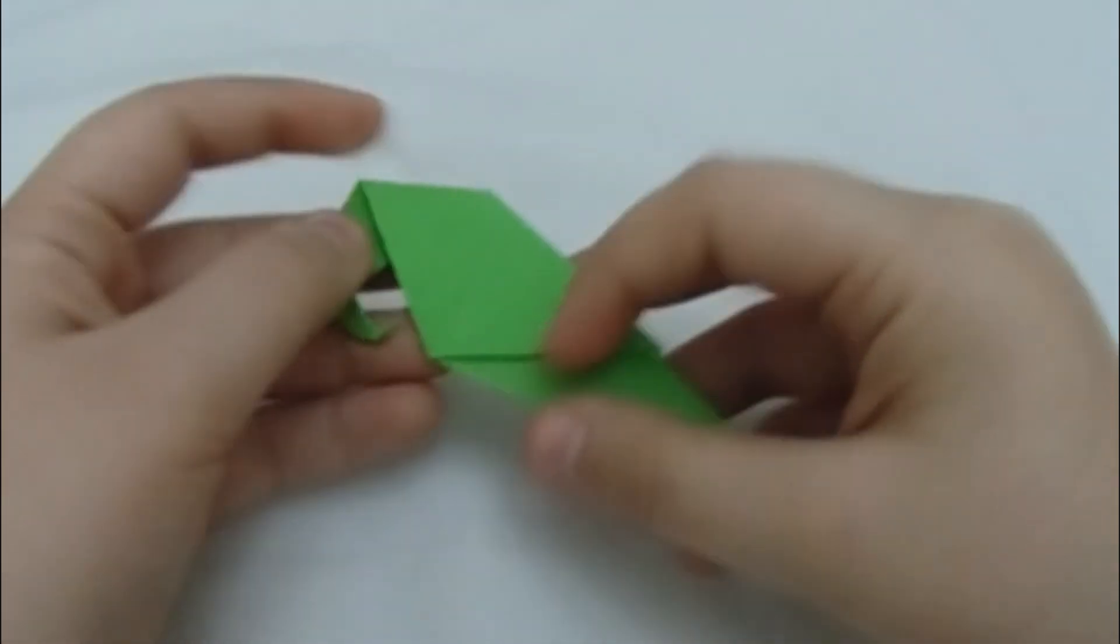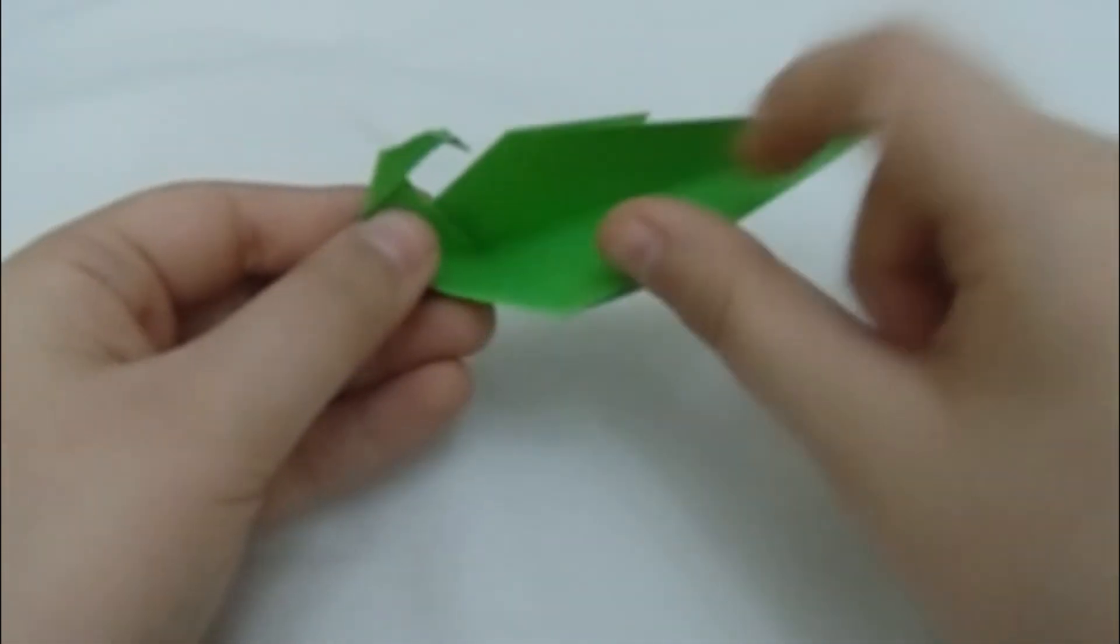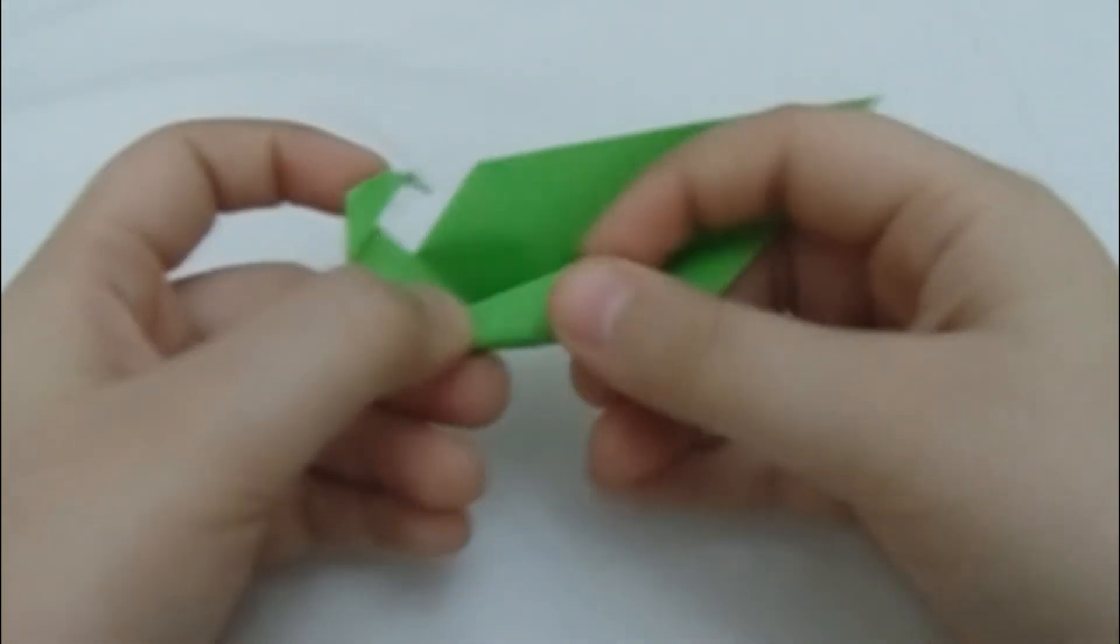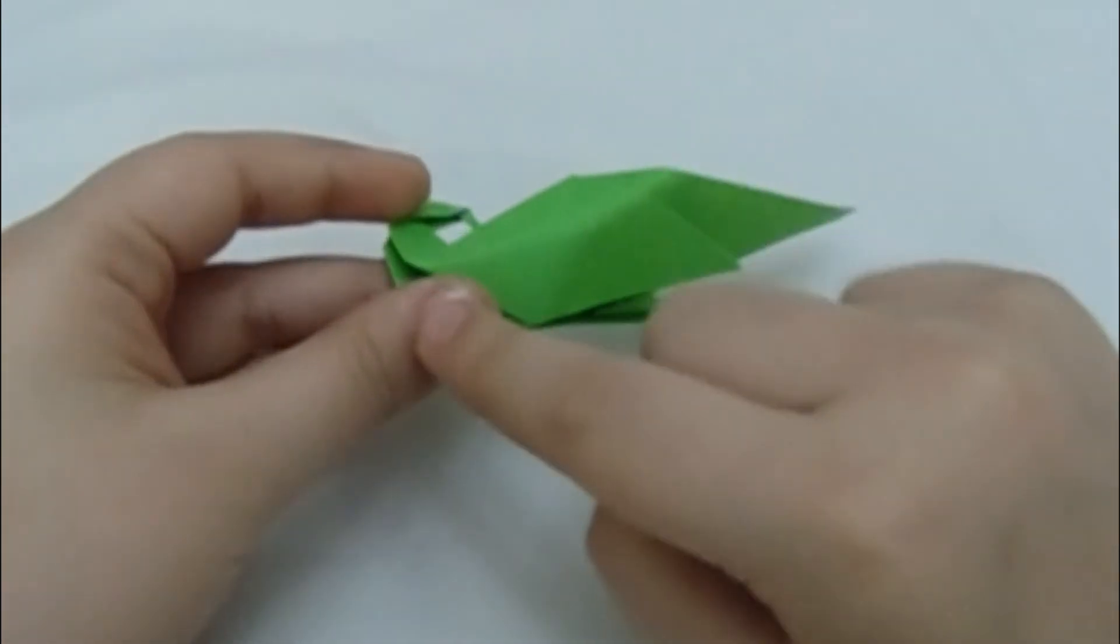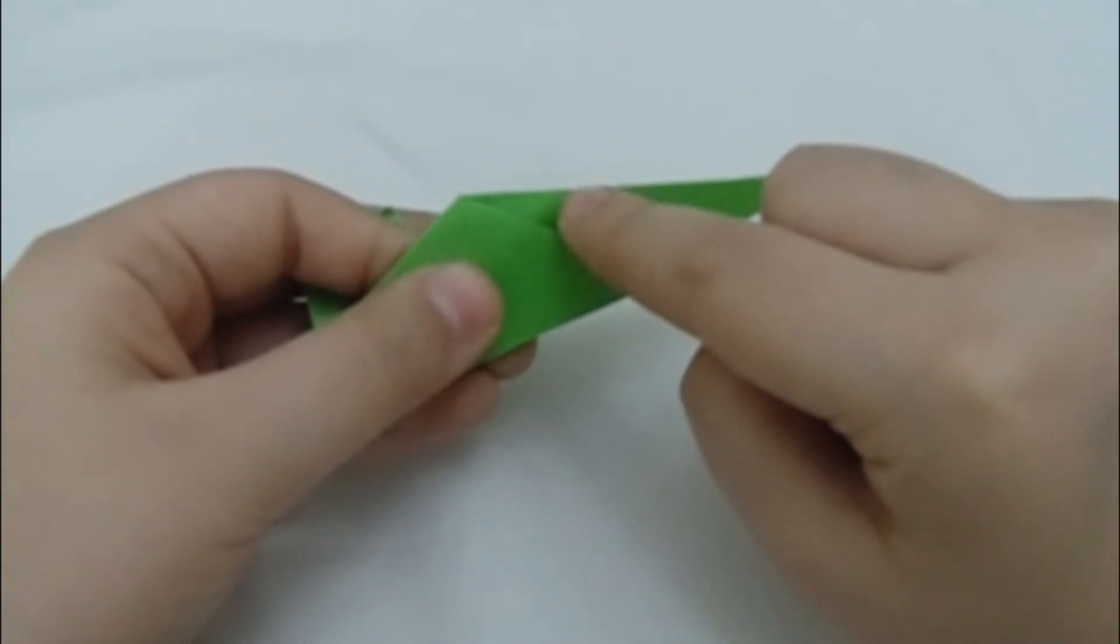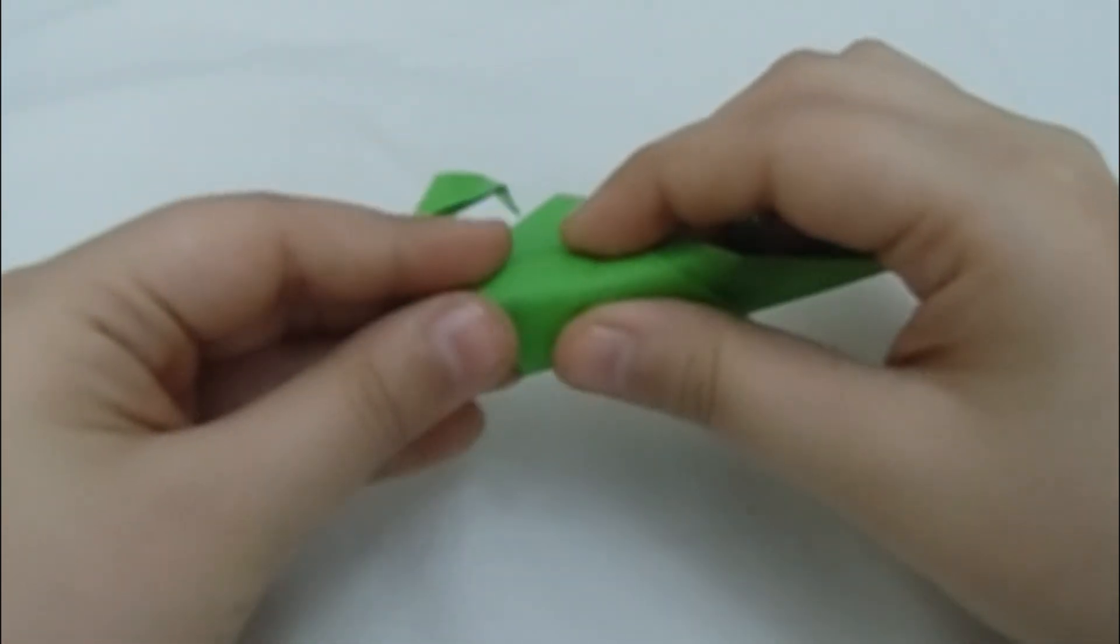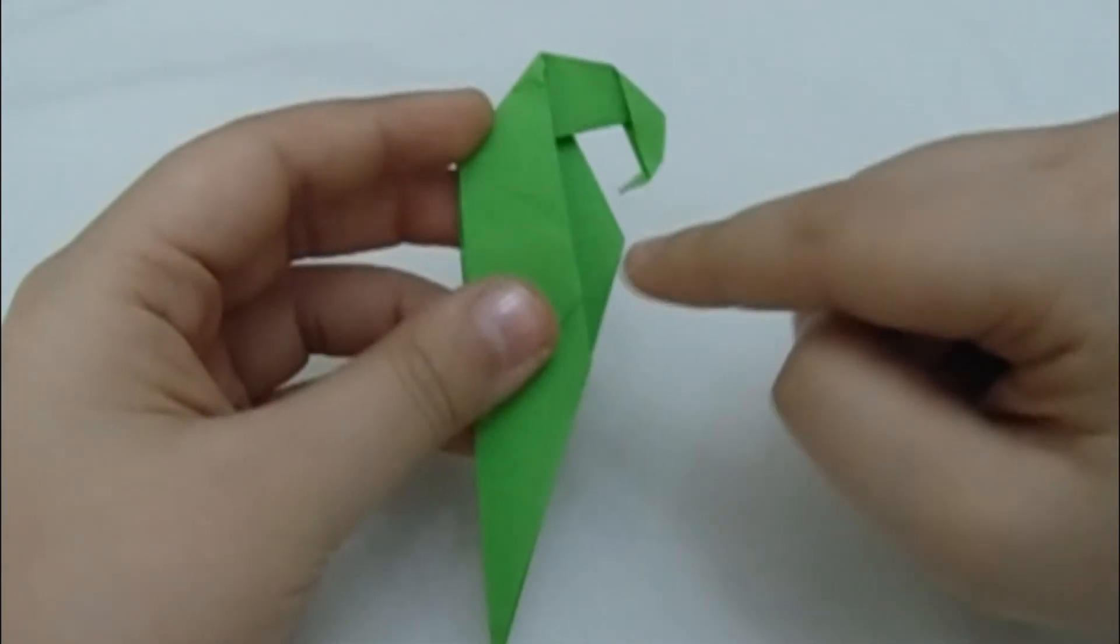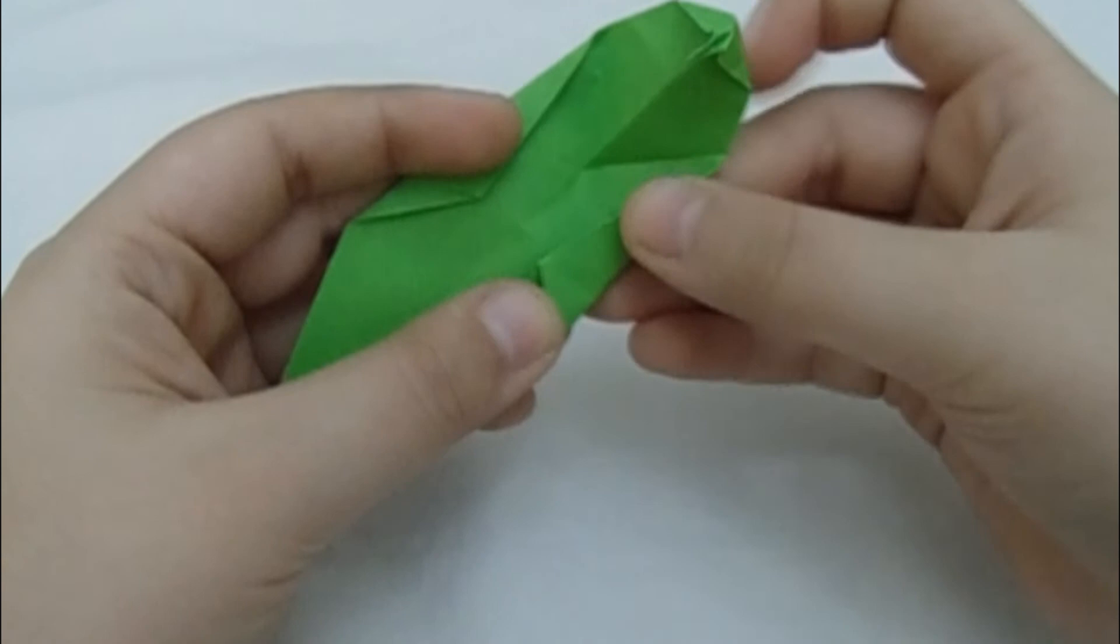And now you want to fold this inside, just to give it a bit of shape. So you want to fold this inside. Make sure it's out from here to somewhere around there. And now just match it up from here. First just fold it there.